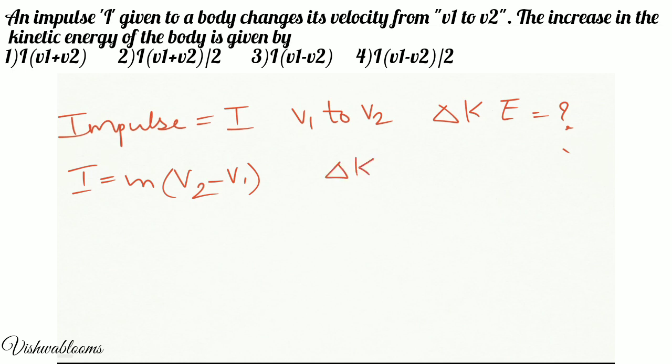Change in kinetic energy formula. It is half into M into V2 squared minus V1 squared as it is the change in velocities. Now this is the final velocity and this is the initial velocity. So let us substitute the values.